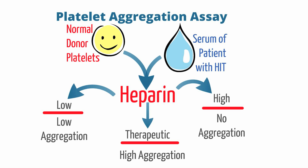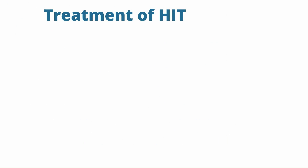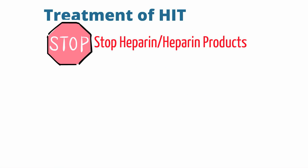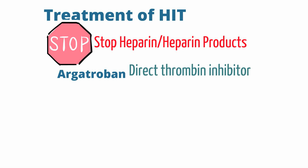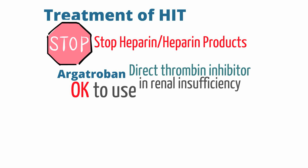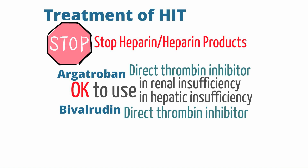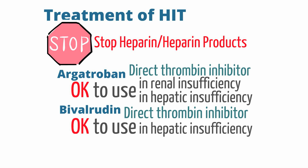Now that we've discussed how to diagnose HIT type 2, let's discuss treatment. If you suspect a patient has HIT, stop all heparin injections and products. Keep in mind certain devices may be lined with heparin, so stopping DVT prophylaxis injections alone may not be enough. Given these patients are hypercoagulable, they need to be started on a direct thrombin inhibitor, like argatroban or bivalirudin.